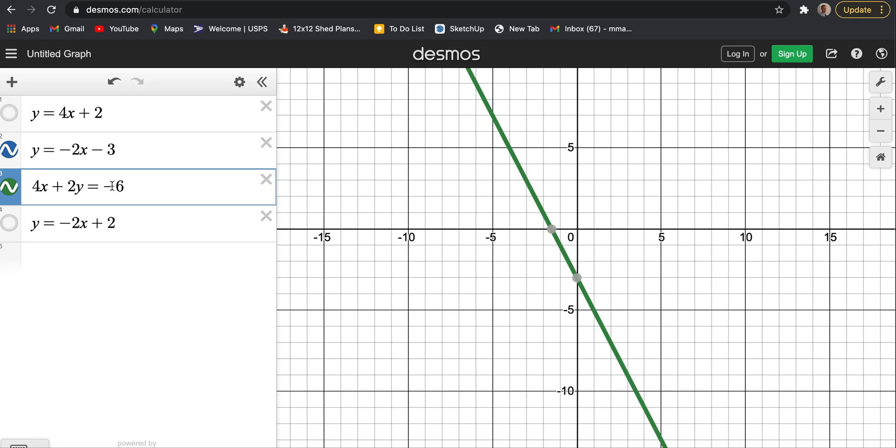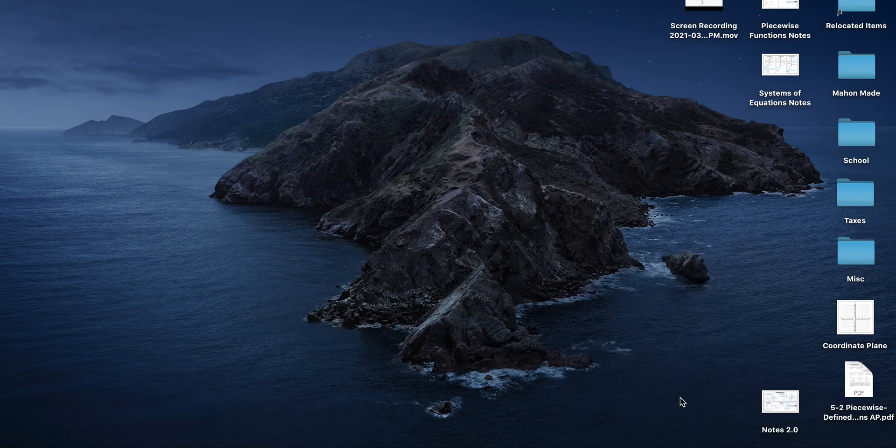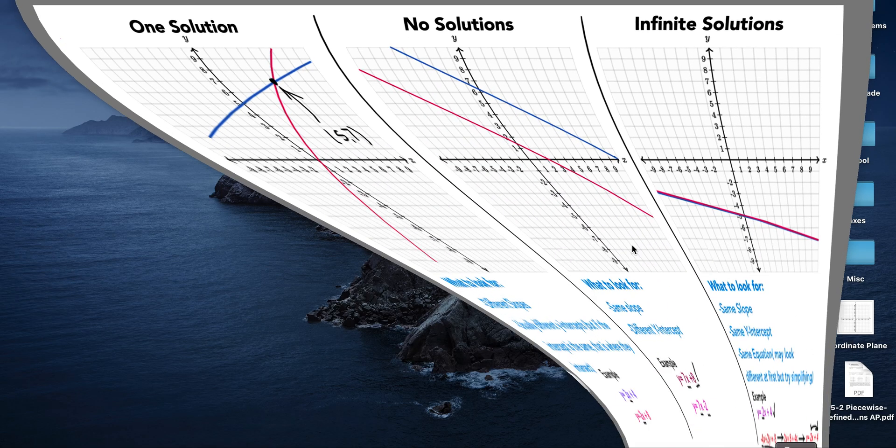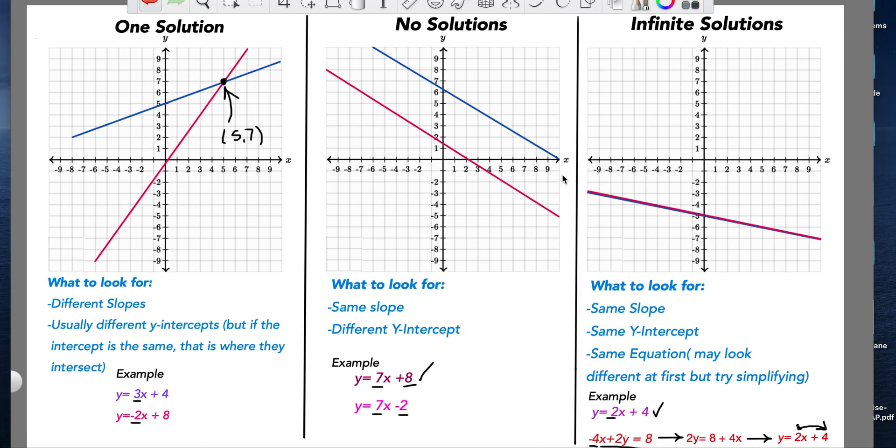And that's the big idea for this video is that there are three different outcomes with systems of equations. It's either one solution, no solutions or infinite solutions. And your goal is to be able to identify these by looking at the characteristics of the equation. I hope that you understand it from a graphing standpoint. The goal of this video is to be able to look at an equation and be able to tell how many solutions it has. So I hope this video helps you out and good luck.